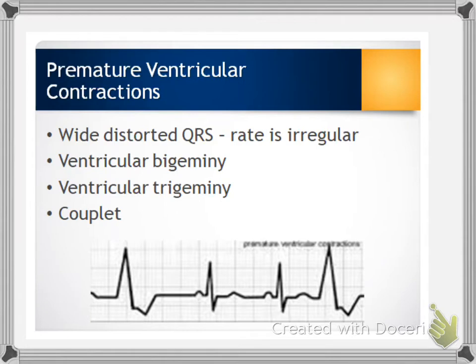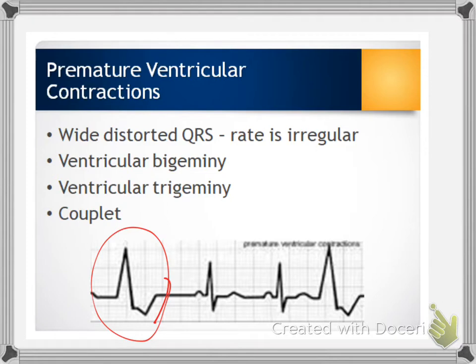Premature ventricular contractions (PVCs) are wide, distorted QRS complexes. The rate can be regular or irregular, and they are classified as ventricular bigeminy, trigeminy, or couplet. They typically occur with stimulants such as caffeine, alcohol, and nicotine, and can also be a side effect of digoxin. PVCs can occur with fever, hypoxia, exercise or emotional stress, during an MI, heart failure exacerbation, or with electrolyte imbalances — specifically potassium and magnesium.